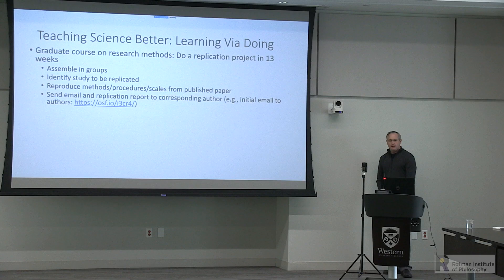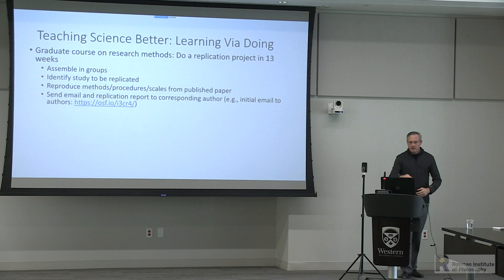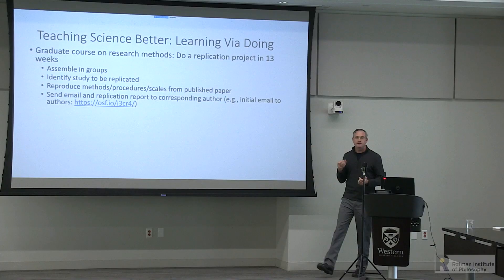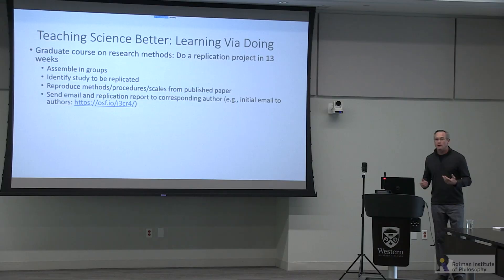We send an email and the replication report to the corresponding author, explaining what we're doing and what we'd like to do, asking them to look at what we're missing and include any relevant study materials. In all five cases, the corresponding author responded positively within 24 hours, and we got all the information for all the studies. We continued to work closely with the authors throughout — we're interested in the effect, not the personalities.